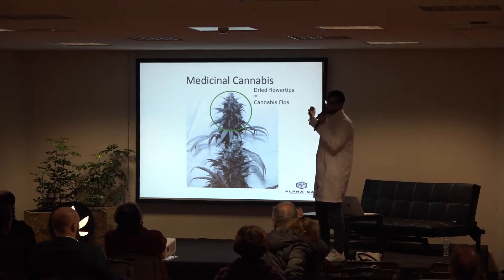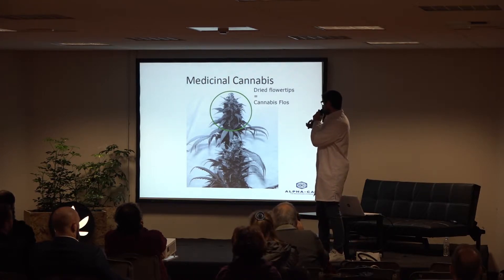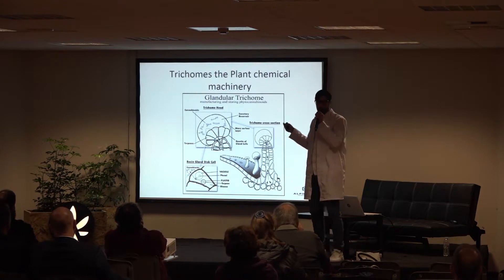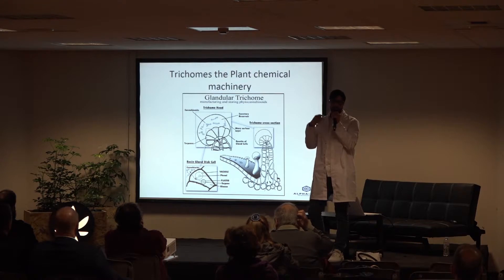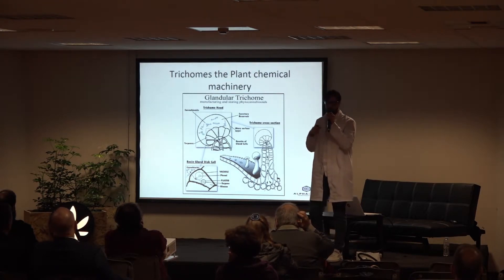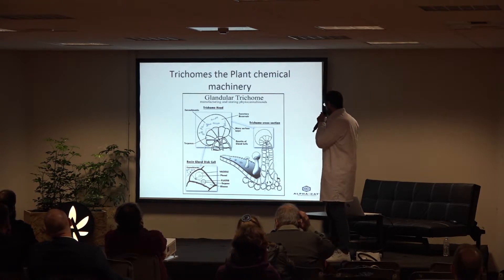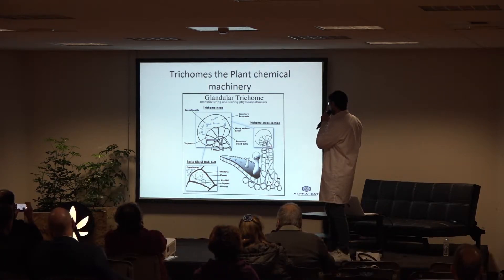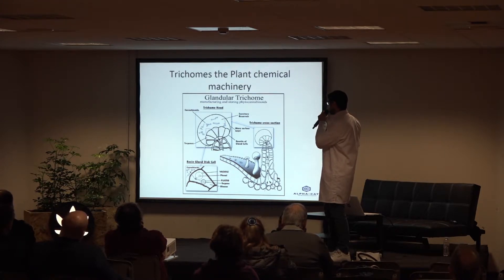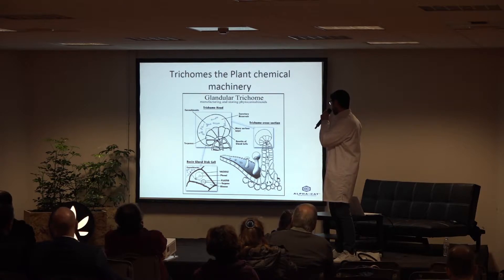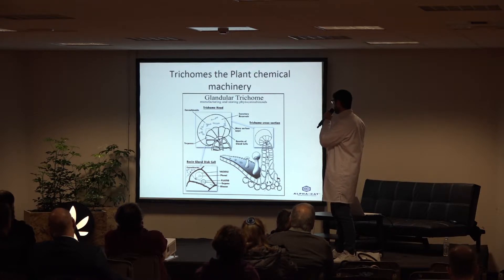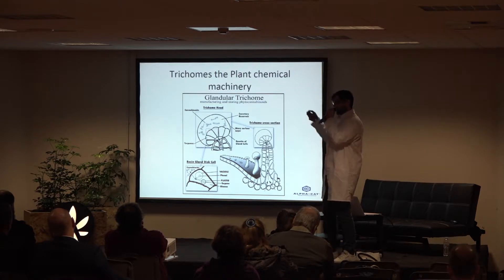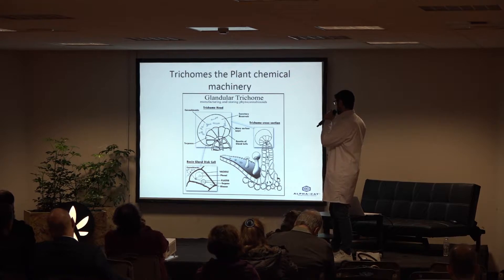When you look at the cannabis plant, you see the beautiful flower. But inside that flower are the trichomes. The trichomes are actually the chemical machinery of the plant that produces the secondary metabolites which give all the beneficial effects for different conditions. Inside the trichomes, you have different cell accumulations, and at the top is the secretory reservoir — that's where all the compounds end up. The rosette of gland cells and the terpenes together, through interaction with sunlight, trigger cannabinoid production.